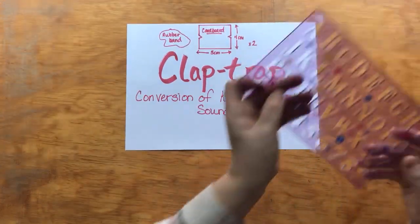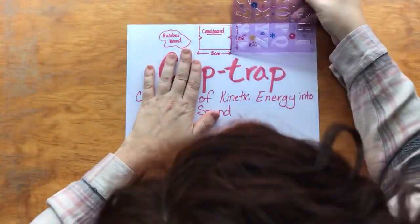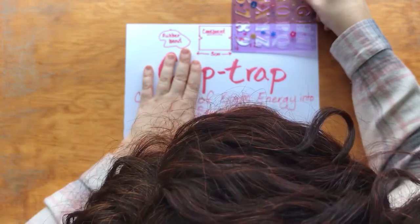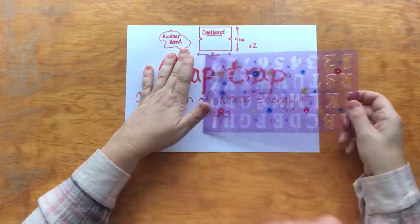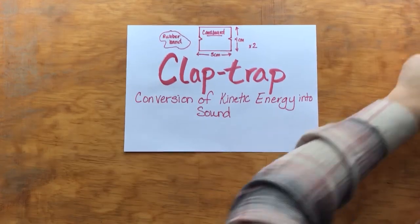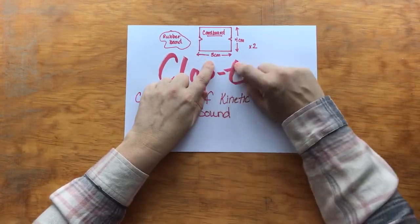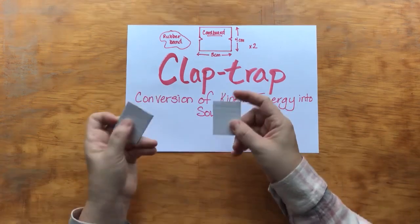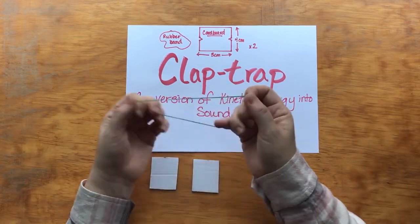Let me just measure that real quick. That is actually one and a half inches by two inches sorry about that I mixed up my conversions. So two inches by one and a half inches for the cardboard and you need two pieces of cardboard and you also need a rubber band.